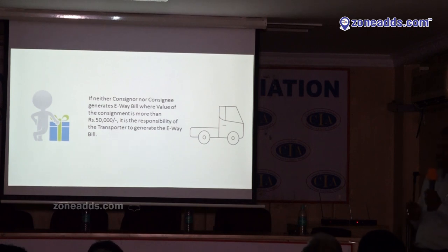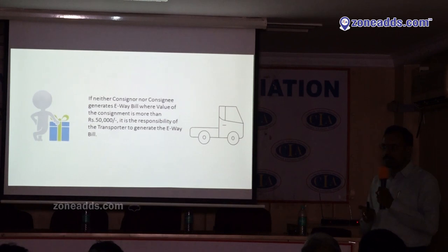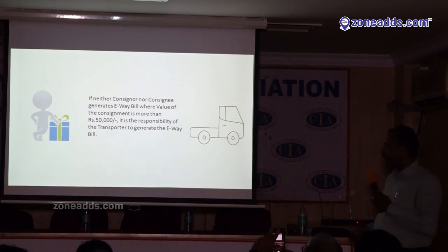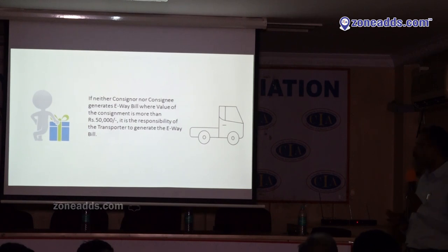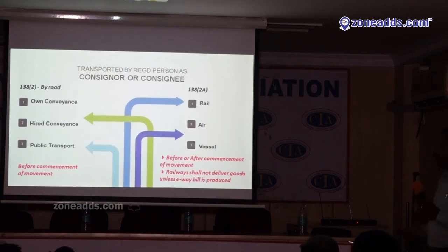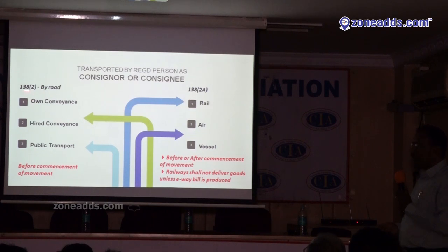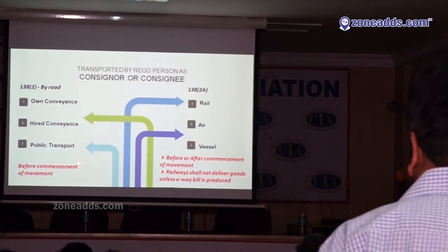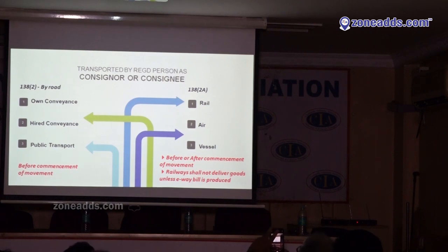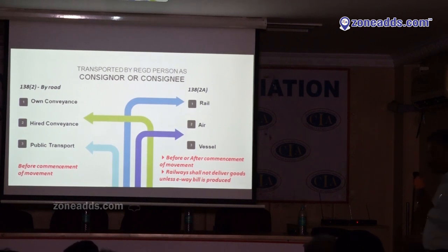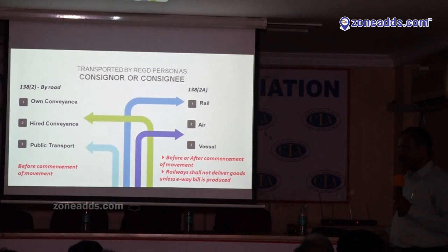If the consignor or consignee has not generated the E-way bill, it is the responsibility of the transporter to generate it. If he also doesn't generate, he will be made responsible and the consignment will be detained — transporter cannot move the goods without an E-way bill. If goods are transported on own conveyance, hired conveyance, or public transport like an RTC bus, the E-way bill has to be generated before commencement of movement. If movement is by rail, air, or vessel, it can be generated after commencement, but railways will not deliver the goods unless you produce the E-way bill.